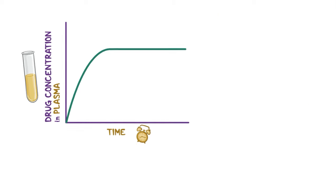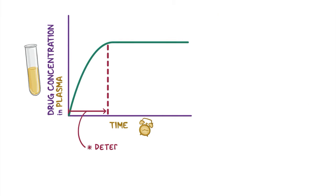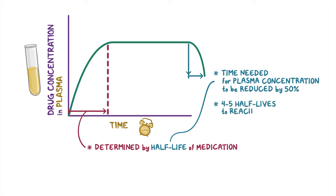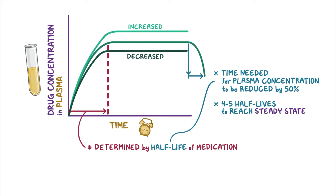The time required to reach steady state is determined by the half-life of the medication, which is the time needed for the plasma concentration to be reduced by half, or 50%. It usually takes four to five half-lives to reach steady state. The concentration at steady state depends on the infusion rate, so when the infusion rate is increased or decreased, the plasma concentration will rise or fall until it reaches a new steady state.